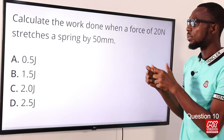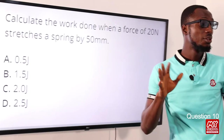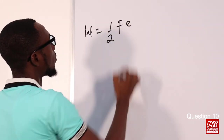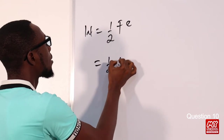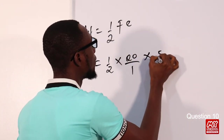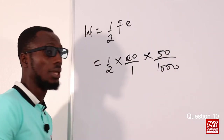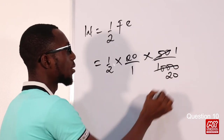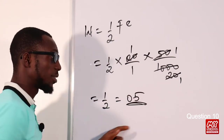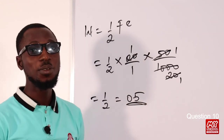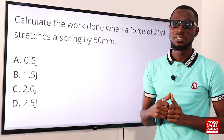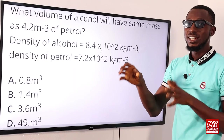Question ten: calculate the work done when a force of 20 newtons stretches a spring by 50 millimeters. Using W = ½Fe: W = ½ × 20 × (50/1000) = ½ × 20 × 0.05 = 0.5 joules. Scanning the options, 0.5 J is found in option A, so option A is the correct answer.